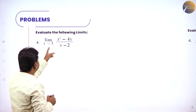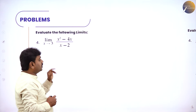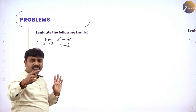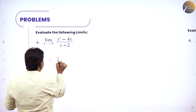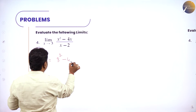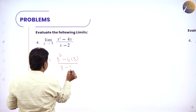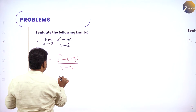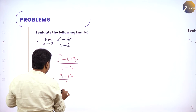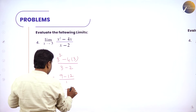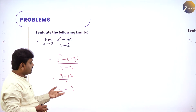Next, limit x tends to 3 of x squared minus 4x by x minus 2: x tends to 3 means put x as 3, giving 3 squared minus 4 into 3 divided by 3 minus 2. That is 9 minus 12 divided by 1 equals minus 3. You got a finite value minus 3.